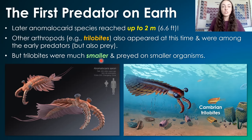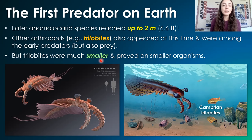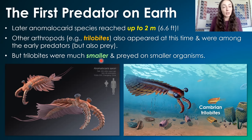Some trilobites got up to around 70 centimeters — I have a trilobite video if you want to check it out. But in the Cambrian, they were still relatively small, especially compared to the up to two meters of anomalocaridids out there.